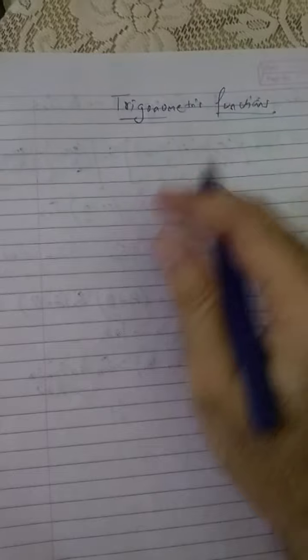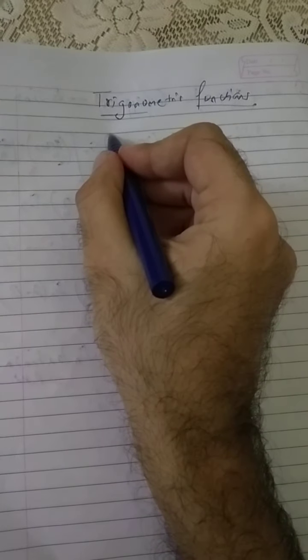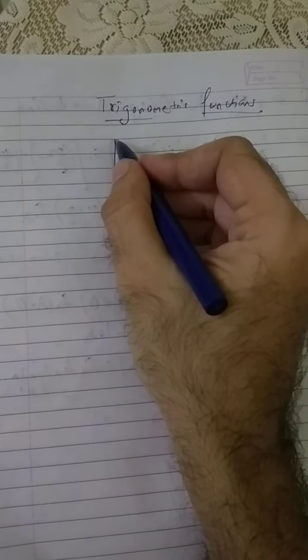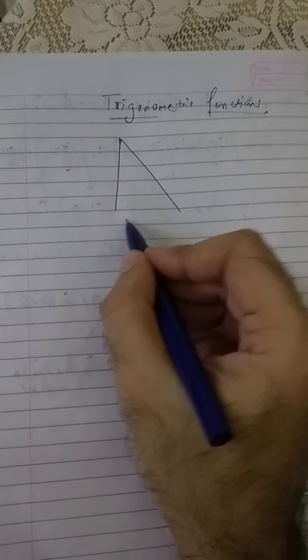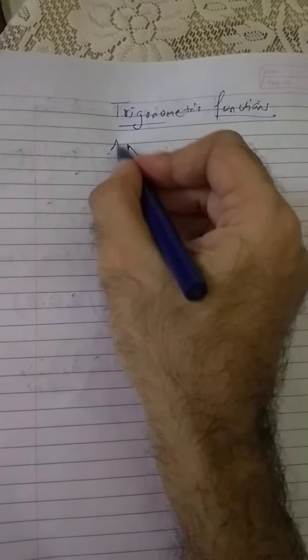In this video we will talk about the next chapter which is trigonometric functions. In tenth class only we have discussed the trigonometric ratios and we understood right angle triangles, and with the help of right angle triangles taking a reference angle we defined six types of ratios.